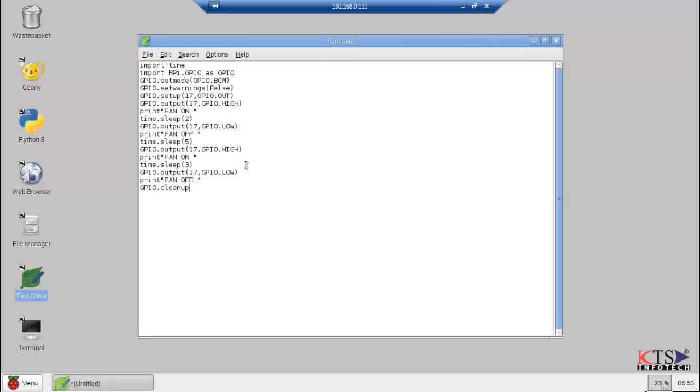Here's our program. First, we import the GPIO library. Next, import the time library, which allows us to use sleep. Use board pin numbering and set up GPIO pin 17 as output. Turn on GPIO pin 17, then the fan turns on and waits 2 seconds.